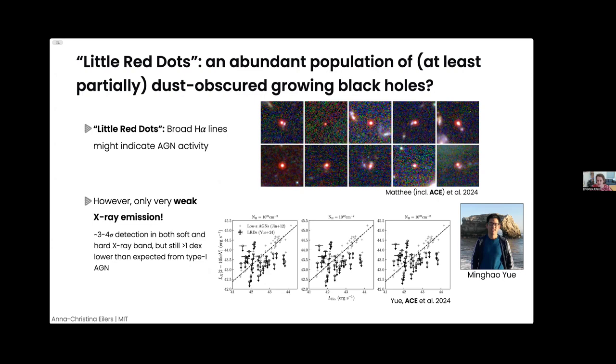So far, the smoking gun signature of an AGN, their X-ray emission, had been missing for most of the objects. A postdoc in my group, Minghao Yue, looked into this more and stacked the X-ray emission from these LRDs in the Chandra Deep Fields. The referee made us consider a much larger sample than we originally wanted. We now have a detection, or tentative detection I should say, with three to four sigma, both in the soft and hard X-ray band of these little red dots in the Chandra Deep Fields. It's still significantly fainter than what we'd expect from optical emission based on type-one AGN, but it looks like the X-rays are at least present, which is exciting.